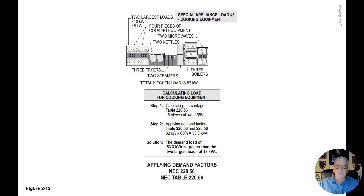Step 2: Table 220.56 allows 65% of the 82 kW, which equals 53.3 kVA. That is the solution — that is the answer.